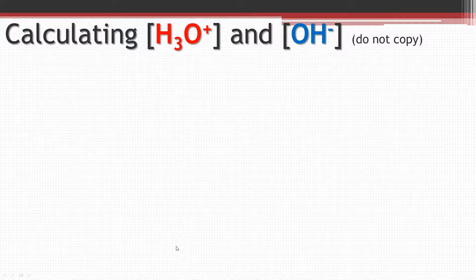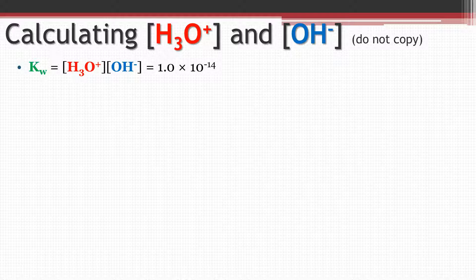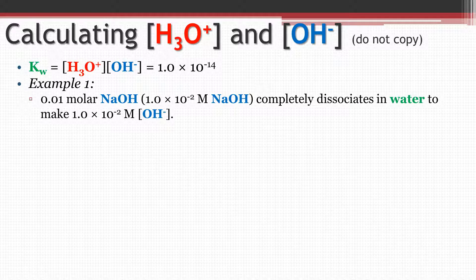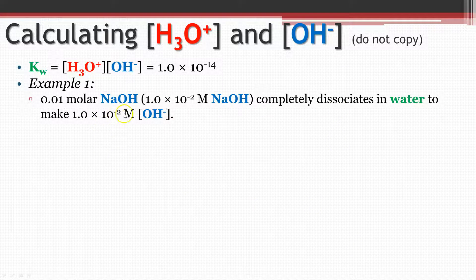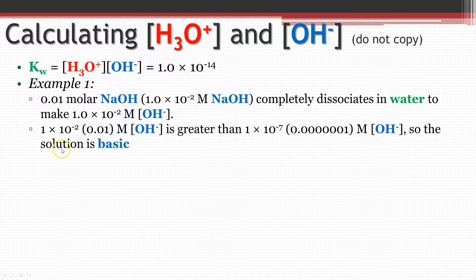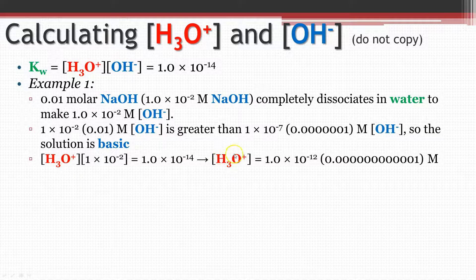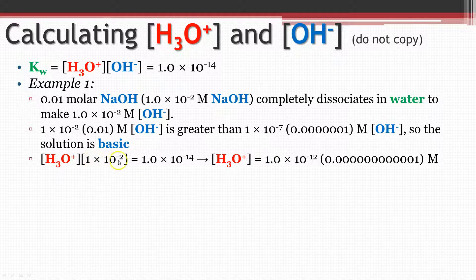Here's how we calculate them. The product of hydronium and hydroxide is always 1 × 10⁻¹⁴. So if I have 0.01 molar sodium hydroxide — that's 1 × 10⁻² — it completely dissociates in water to form 1 × 10⁻² molar hydroxide. That is greater than 1 × 10⁻⁷, so the solution is basic. To find the hydronium concentration, I take 1 × 10⁻¹⁴ divided by 1 × 10⁻², giving me 1 × 10⁻¹² molar hydronium. For 0.0002 molar hydrochloric acid — 2 × 10⁻⁴ — it completely dissociates as a strong acid, giving 2 × 10⁻⁴ molar hydronium, which is acidic. Dividing 1 × 10⁻¹⁴ by 2 × 10⁻⁴ gives a hydroxide concentration of 5 × 10⁻¹⁰.